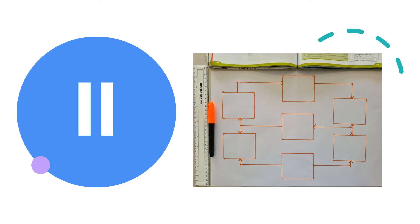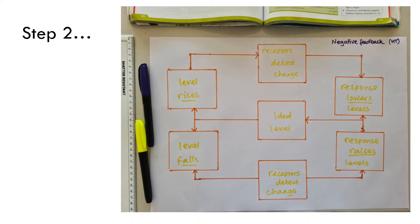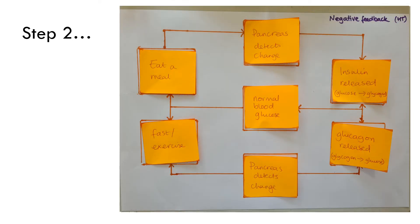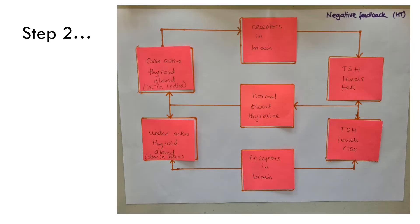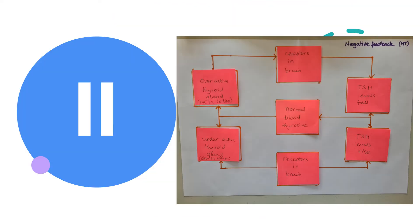Step two: write on individual sticky notes the steps in the negative feedback loops of blood glucose control and blood thyroxine control, using different colour sticky notes for each negative feedback loop, or different colour pens. Press pause now so you can complete this.